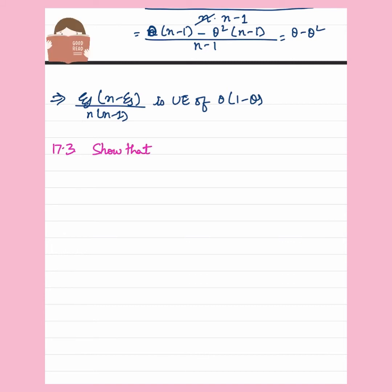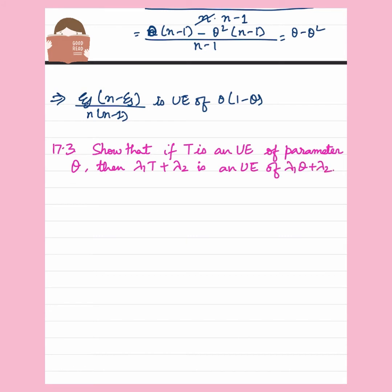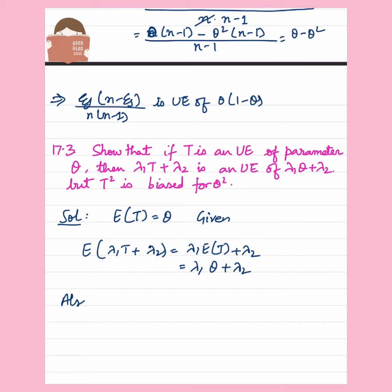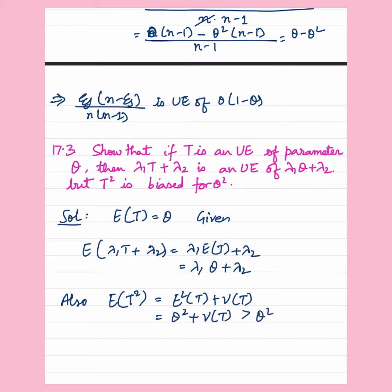Moving on to the next question: we have been given T as an unbiased estimator of parameter theta. We have to show that lambda1·T plus lambda2 is an unbiased estimator of lambda1·theta plus lambda2, where lambda1 and lambda2 are known constants, and that T² is a biased estimator of theta squared. To prove the unbiased part: expected value of (lambda1·T plus lambda2) equals lambda1 times expected value of T plus lambda2, which equals lambda1·theta plus lambda2. To show T² is biased for theta squared, we calculate expected value of T² which equals variance of T plus (E[T])², which must be greater than theta squared since variance of T is a positive quantity.